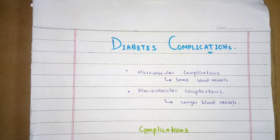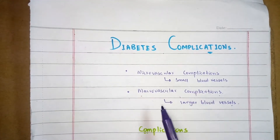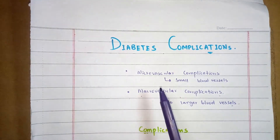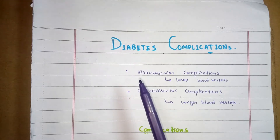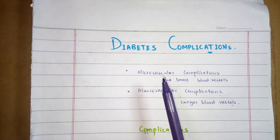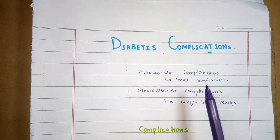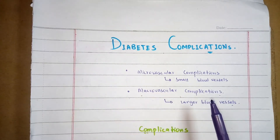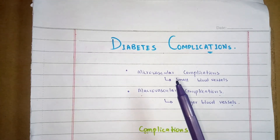Diabetic patients have complications involving the eyes, kidneys, heart, and brain. These complications are divided into microvascular complications and macrovascular complications. Microvascular complications are due to damage of the small blood vessels — micro means small, vascular means blood vessels — while macrovascular complications result from damage of the larger blood vessels.